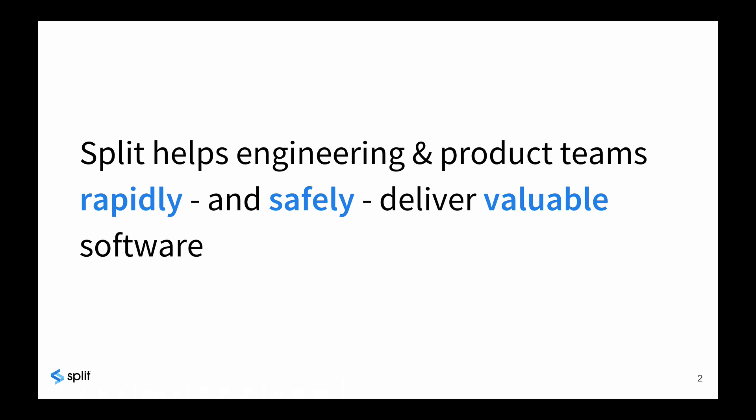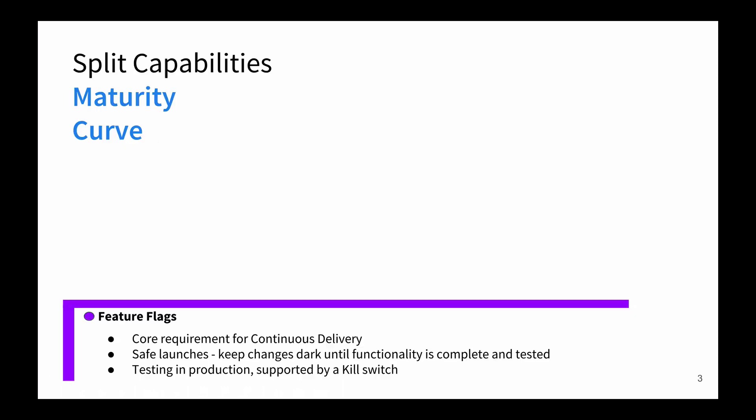Split is a product decisions platform for engineering and product teams that want to rapidly and safely deliver valuable software to customers. Split provides a unified feature flags and experimentation solution built for teams of any size to make data-driven decisions. Feature flags form the basis of the platform, driving the risk out of continuous delivery and streamlining the development process. Flags allow you to assess application stability before customers are exposed to a feature, and provide a framework for agile teams to release faster with less risk, including a kill switch to shut down a feature within seconds.